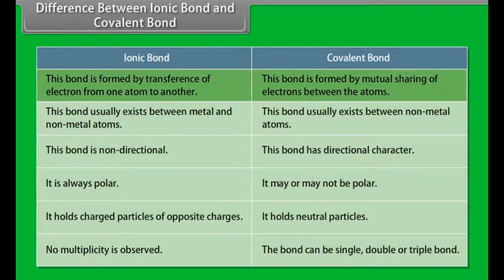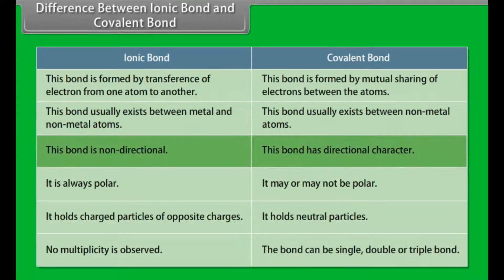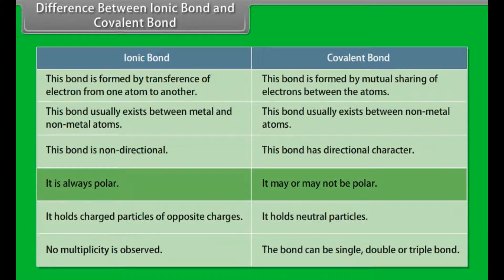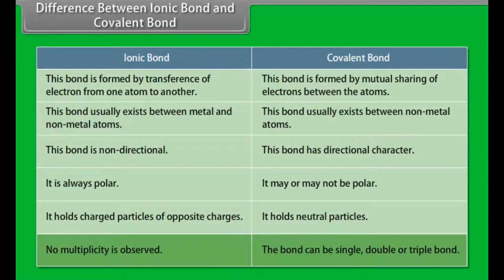Differences between ionic bond and covalent bond. Ionic bond is formed by transference of electrons from one atom to another, whereas covalent bond is formed by mutual sharing of electrons between atoms. Ionic bond usually exists between metal and non-metal atoms, whereas covalent bond usually exists between non-metal atoms. Ionic bond is non-directional, whereas covalent bond has directional character. Ionic bond is always polar, whereas covalent bond may or may not be polar. Ionic bond holds charged particles of opposite charges, whereas covalent bond holds neutral particles. No multiplicity is observed in ionic bond, whereas covalent bond can be single, double or triple bond.